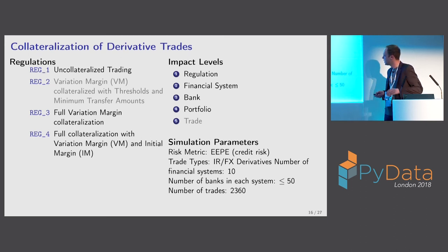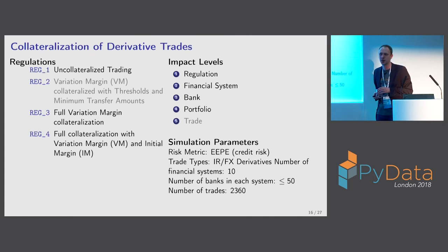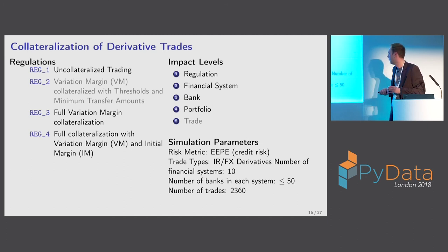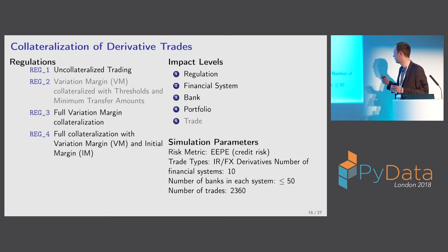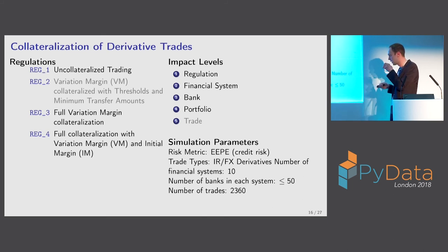The risk type in this simulation is credit risk, measured in EEPE — Effective Expected Positive Exposure — which tells you how much you'll lose if your counterparty goes bust. The trade types are IR/FX derivatives. This first prototype is not super big: ten financial systems each with fewer than 50 banks and a few thousand trades, which means the ORE simulation can run on a notebook.